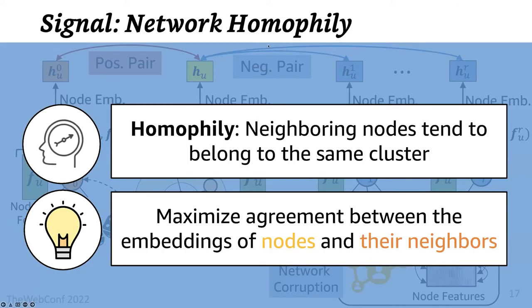Network homophily is the next signal that we use. In real-world graphs, similar nodes are more likely to attach to each other than dissimilar ones. And therefore, a node is more likely to belong to the same cluster as its neighbors than some randomly chosen nodes. So based on this observation, we maximize the agreement between the embeddings of neighboring nodes.